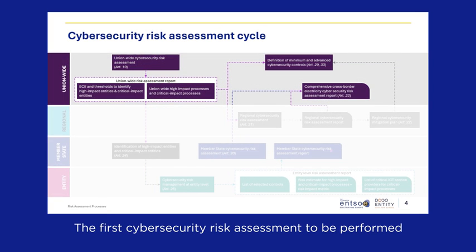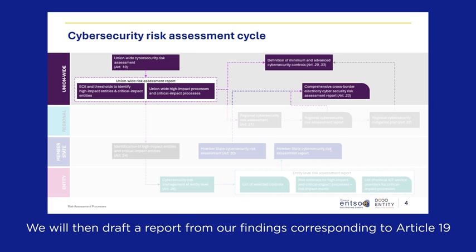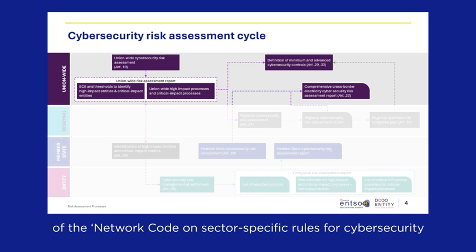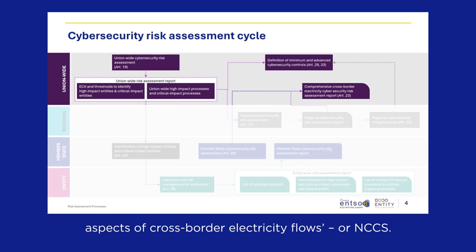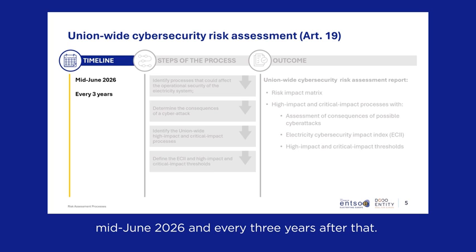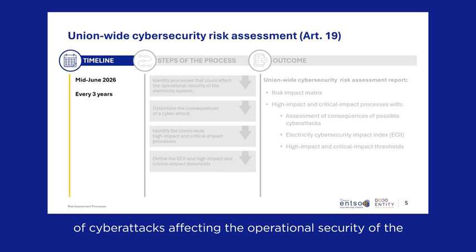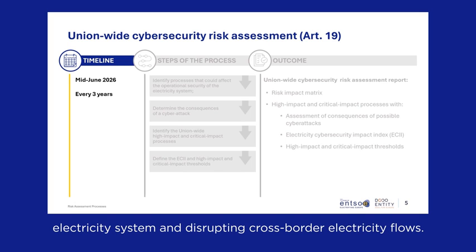The first cybersecurity risk assessment to be performed is at the union-wide level. ENTSOE and DSO Entity will then draft a report from their findings corresponding to Article 19 of the Network Code on sector-specific rules for cybersecurity aspects of cross-border electricity flows, or NCCS. This assessment must be done by mid-June 2026 and every three years after that.